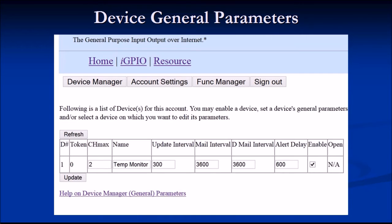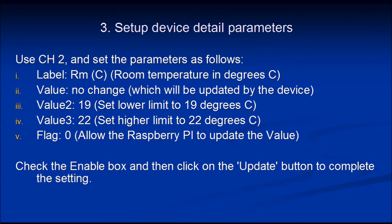On the device detail parameters page, we will use only channel 2 and set several parameters. The label will be 'Room (C)' indicating room temperature in degrees Celsius. We leave the value column empty because that data will come from the Raspberry Pi. Value 2 and Value 3 are set to 19 and 22 respectively — the temperature range outside which you want to be notified.